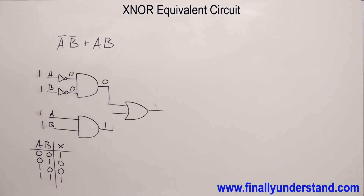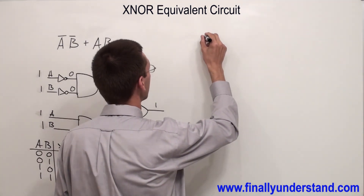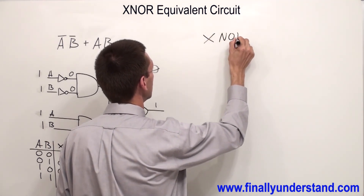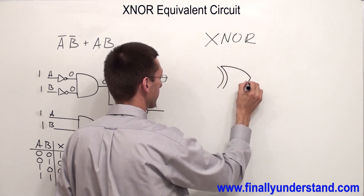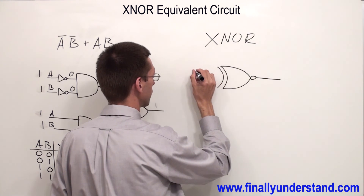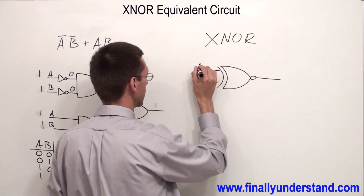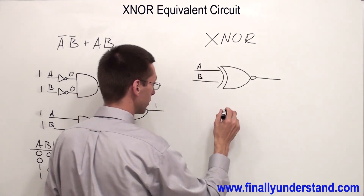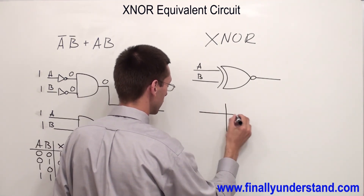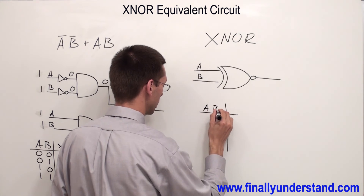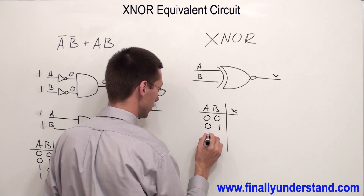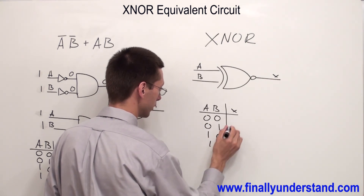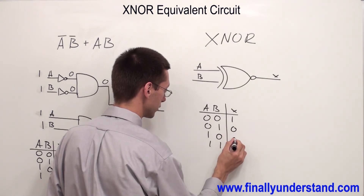This is nothing else — just the truth table of the exclusive NOR gate. The X NOR gate has inputs A and B, and output X. The truth table outputs are: for 00 → 1, for 01 → 0, for 10 → 0, for 11 → 1.